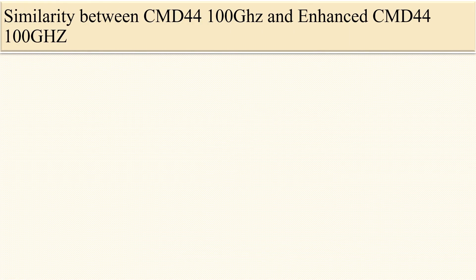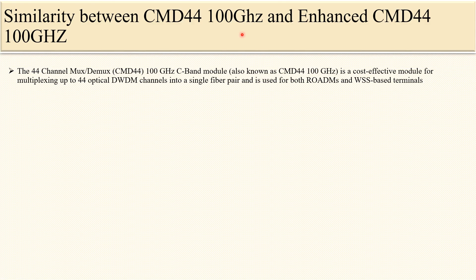First we will discuss the similarities between CMD44 100 GHz and enhanced CMD44 100 GHz. Both are modules used for multiplexing up to 44 optical DWDM channels into a single fiber pair. These modules are used for both ROADM and WSS-based terminal sites. It is a C-band module, meaning it supports C-band frequencies with a maximum of 44 channels.